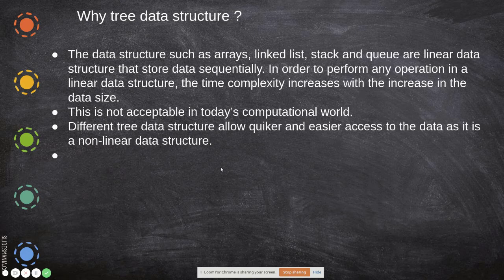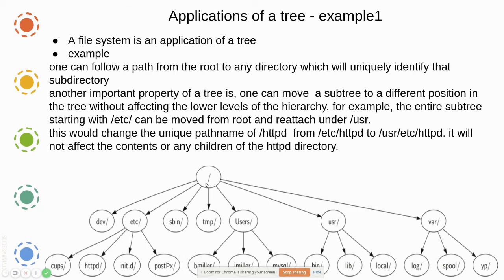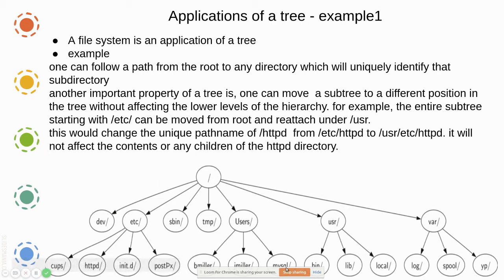Tree data structures allow quicker and easier access to data as they are non-linear. An application of a tree is a Linux kernel file system — the root has directories, which have further subdirectories, looking like a tree structure. One can follow the path from root to anything quickly — if I want to access MySQL, I can go from root directly there, whereas in a linear data structure I would have to search through everything to reach it.